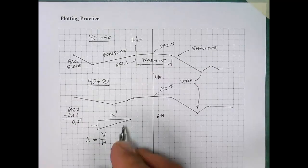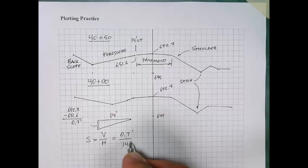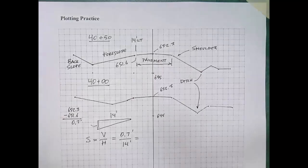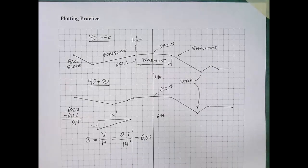I like to express slope as vertical over horizontal. So, here you can see our vertical distance is 0.7 feet. Our horizontal is 14 feet. So, if you do the math, you'll see that the result is 0.05.